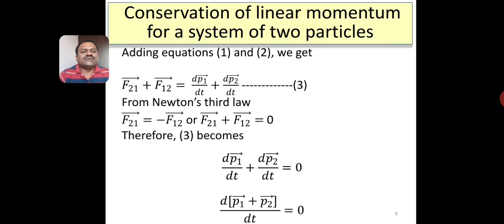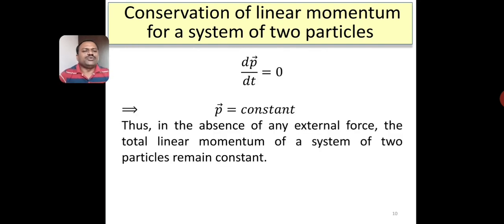Substituting this in equation 3, we get dp1 by dt plus dp2 by dt is equal to 0. Since p1 and p2 are independent of each other, we can write this as d by dt of (p1 plus p2) equals 0, where p1 plus p2 stands for the total momentum of the system of two particles. Therefore, if the total momentum is p, then dp by dt is equal to 0, or p is equal to a constant. Thus, for a system of two particles, in the absence of any external force, the total linear momentum remains constant.